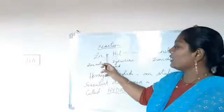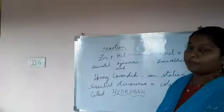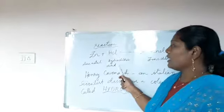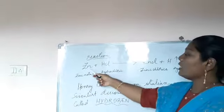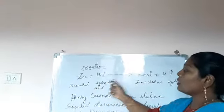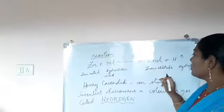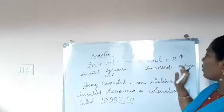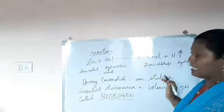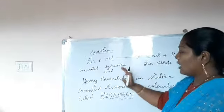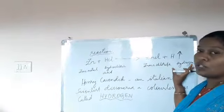See, here we are taking zinc metal and hydrochloric acid. When zinc metal reacts with hydrochloric acid, what is formed? The zinc combines with the chloride — zinc chloride is formed, and the by-product is hydrogen gas. So this arrow indicates that it is a gas. A metal reacting with an acid will give you a new compound and hydrogen gas.